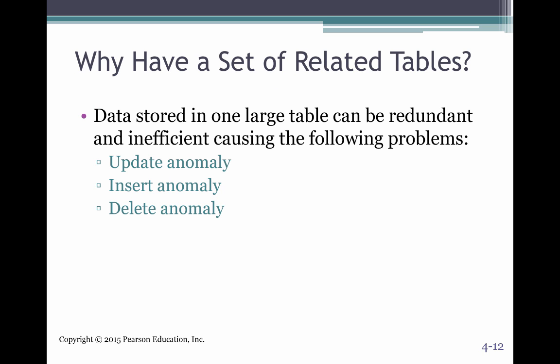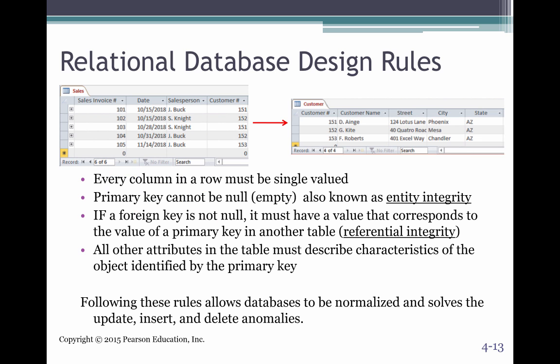So when you have a set of related tables, again, the data stored in one huge table can be pretty redundant and it can be inefficient. You may not be able to update it entirely. You may not be able to insert or delete. So that's why we want to have different sets of tables. Hence why we have the sales table and the customer table. And so every column in the row must have a single value. That is a critical piece to database management. The primary key can never be null or empty. We always need that because that's how we know where it's going, and that gives us some integrity to that data.